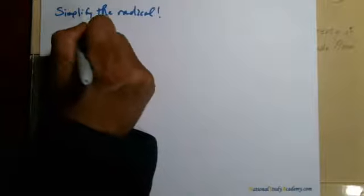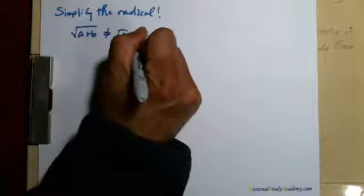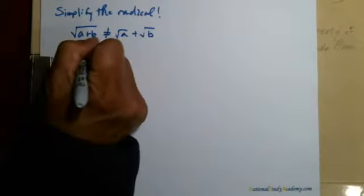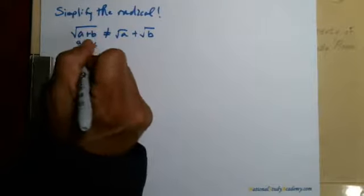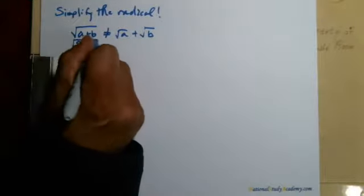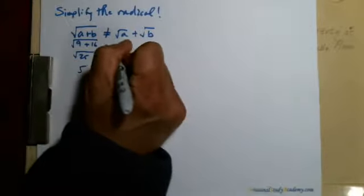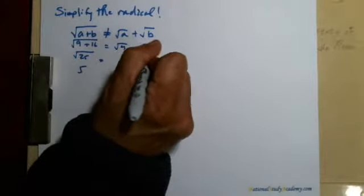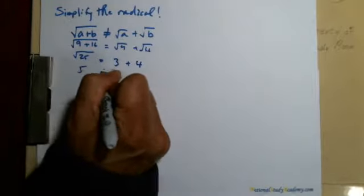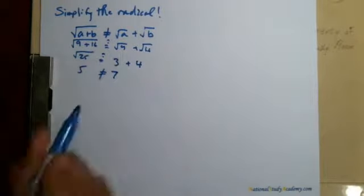Square root of a plus b does not equal square root of a plus the square root of b. Here's an example. If I go 9 plus 16, square root of 25 on the inside here, which is equal to 5. Square root of 9 plus square root of 16, that would be 3 plus 4. Obviously, that does not equal 5.